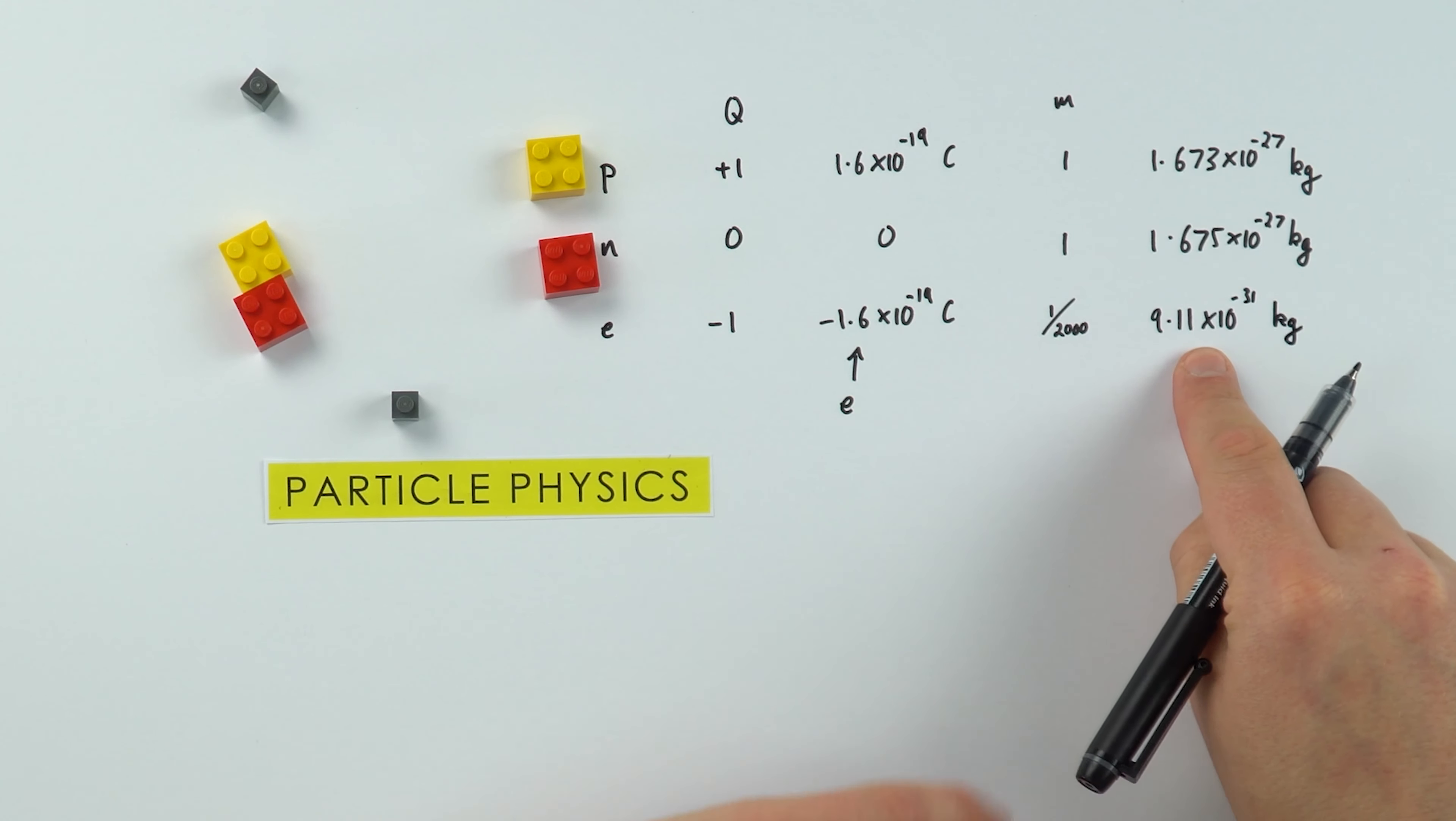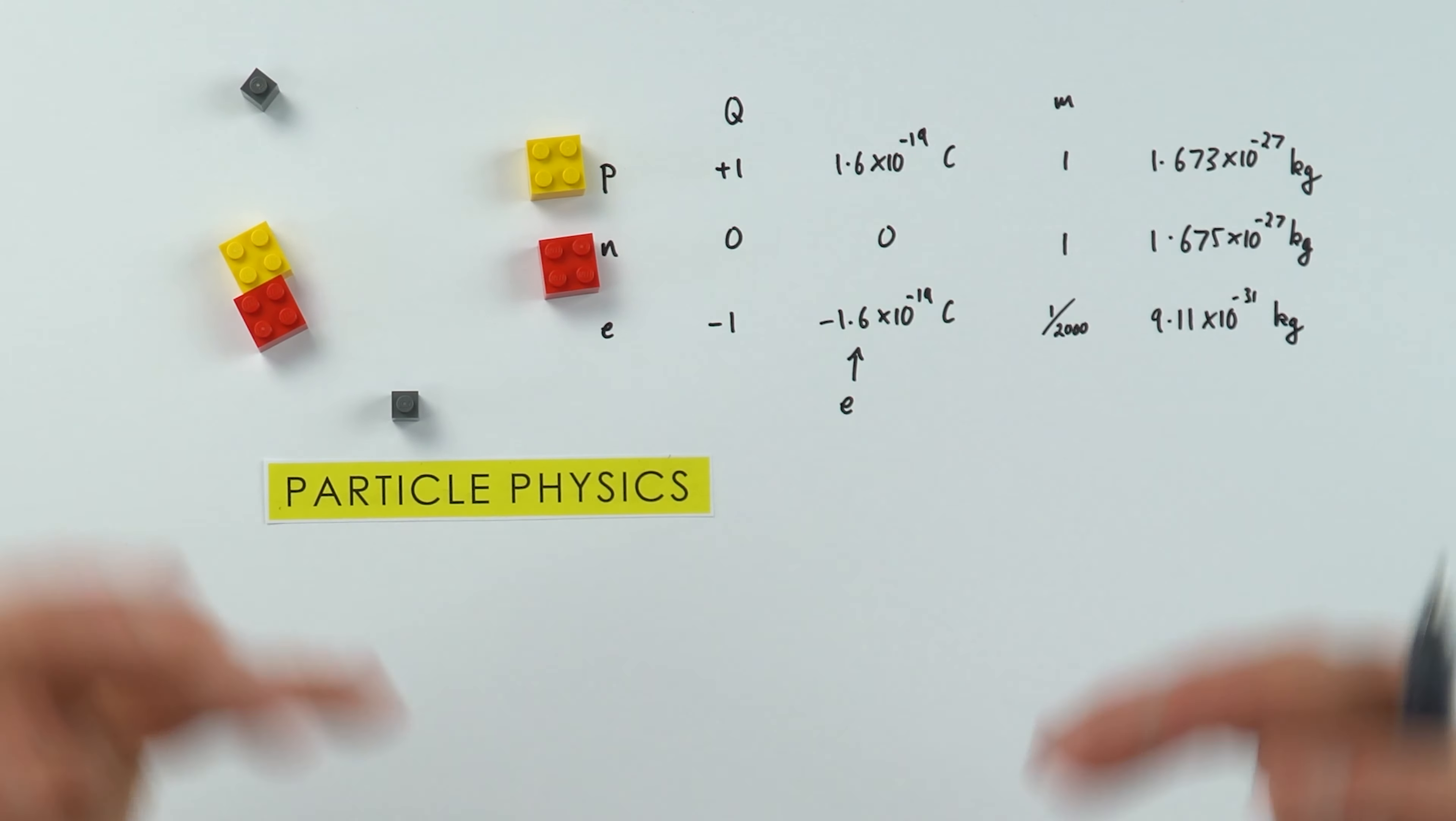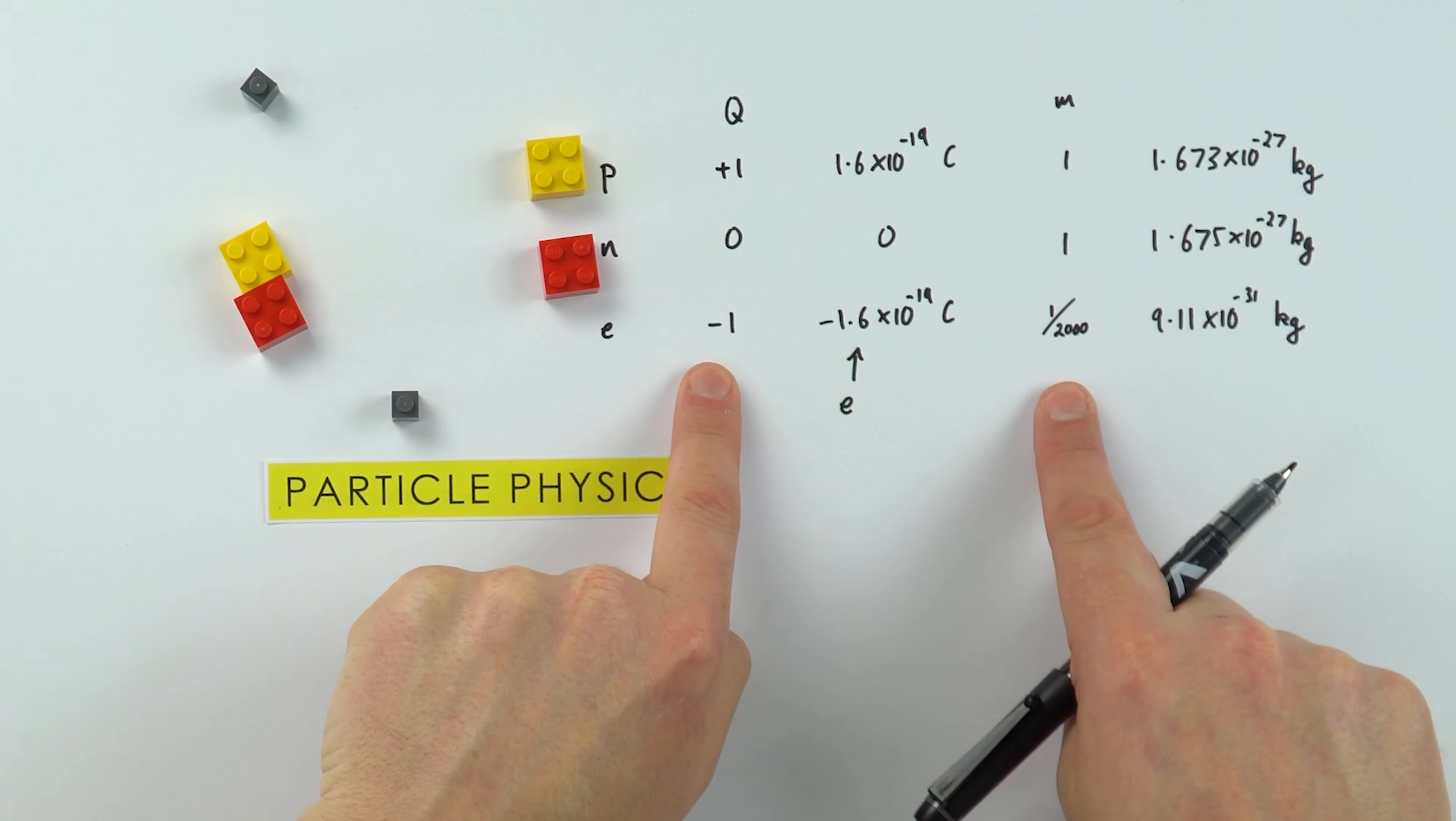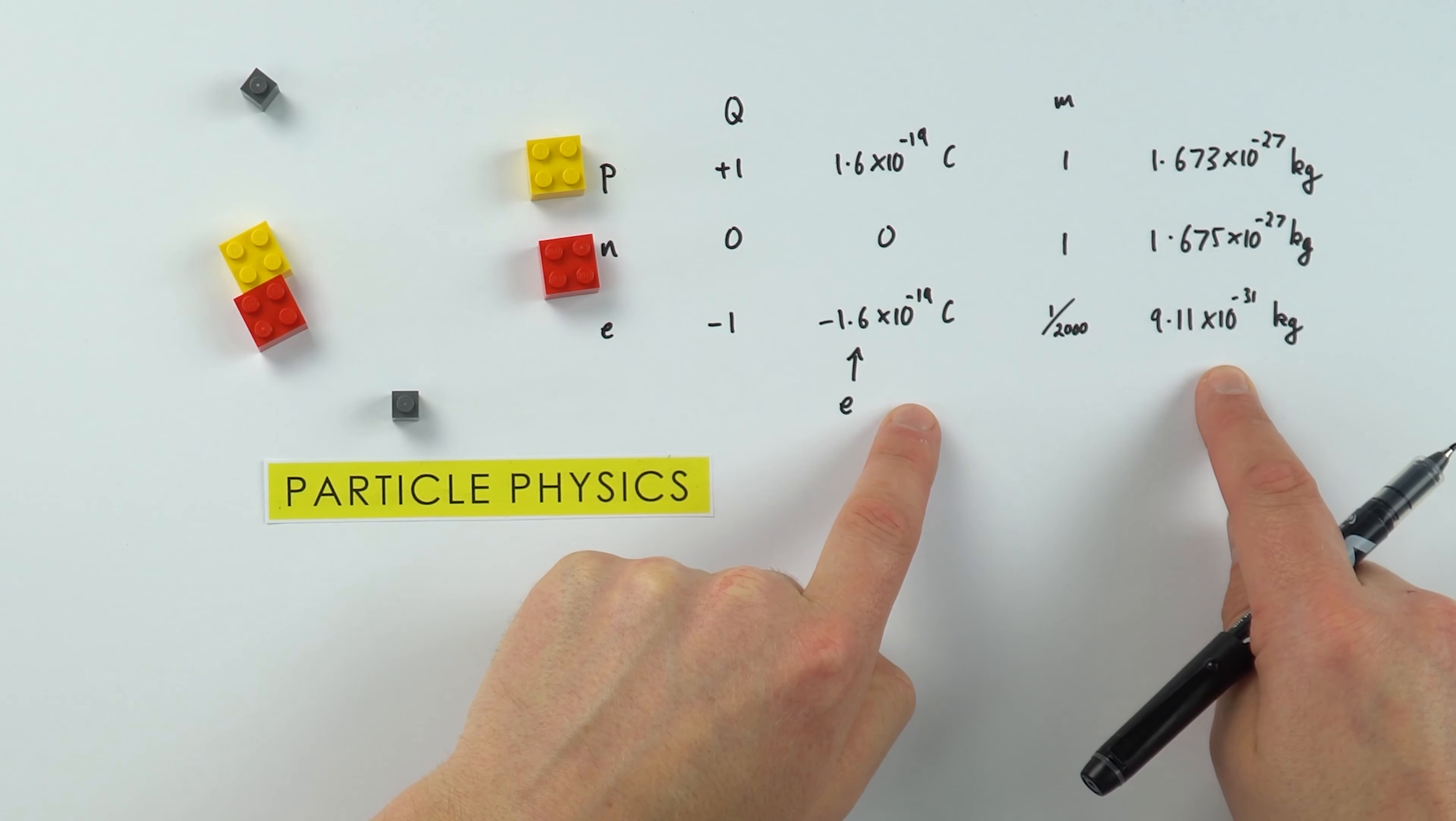This number here you will be very familiar with. We're often looking at the mass of electrons, especially when they're being accelerated. So that's some stuff that we know from GCSE and how we extend it a bit as we go into A level.